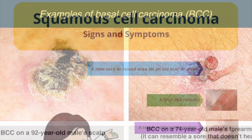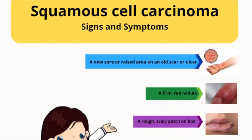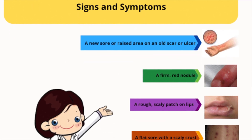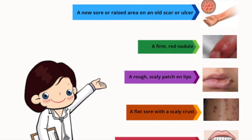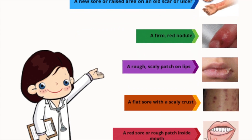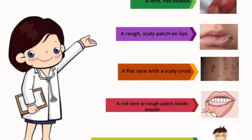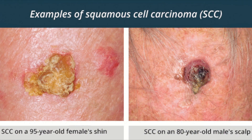Squamous cell carcinoma occurs on sun-exposed areas of your body such as your face, ears, and hands. People with darker skin are more likely to develop squamous cell carcinoma on areas that aren't often exposed to the sun. Squamous cell carcinoma may appear as a firm red nodule or a flat lesion with a scaly, crusted surface.